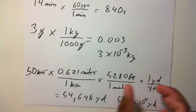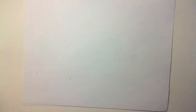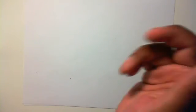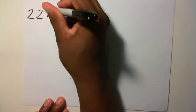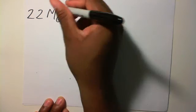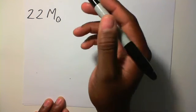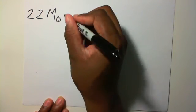Let's do one more. This one's a little bit tricky. Let's say you have 22 solar masses. This is just a type of mass, the mass of one sun.